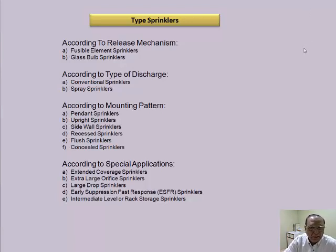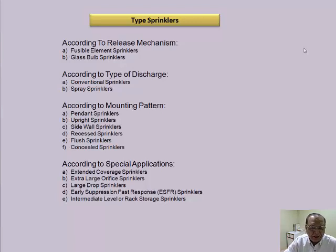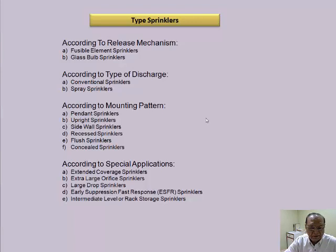The application for sprinklers is as per the type of discharge, which includes conventional sprinklers and spray sprinklers. Spray sprinklers are generally open sprinklers used to cool surfaces or for high water spray systems. According to the mounting pattern, sprinklers are pendant type, upright type, sidewall, recessed, flush, and concealed sprinklers.